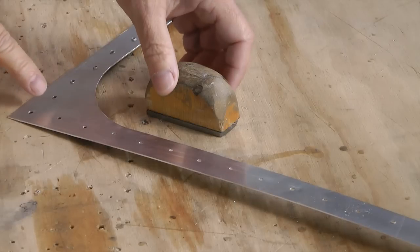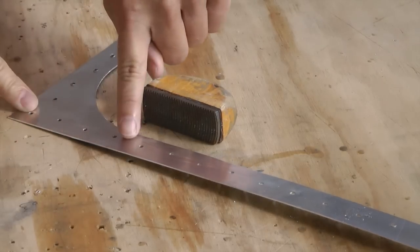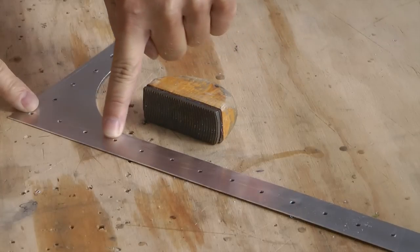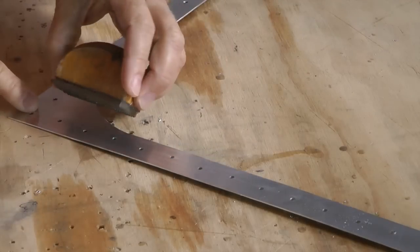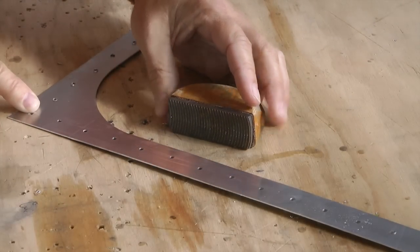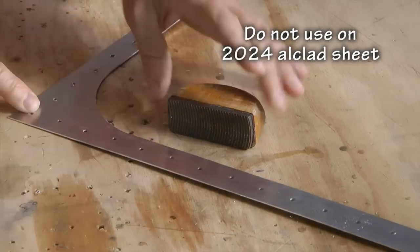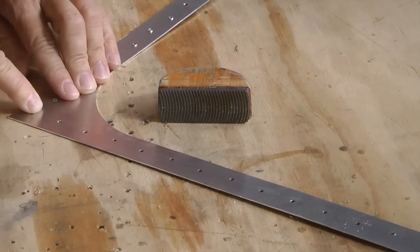One of the other benefits of using the file is that there is absolutely no chance of countersinking the holes in this thin metal because it's all done on the surface. So, it's actually a preferred method if you're able to do it this way.